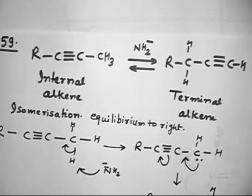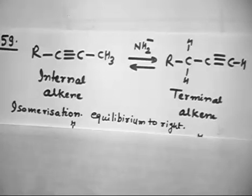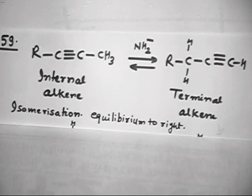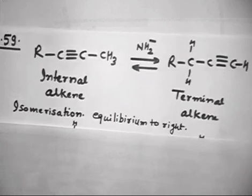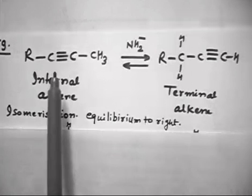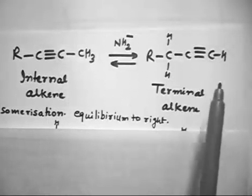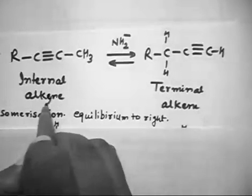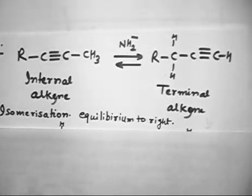Let us discuss this problem. Let us draw this figure and then discuss what this is all about. This is an internal alkyne because the triple bond is inside the aliphatic chain, not on the terminal side. This is a terminal alkyne. So one is terminal alkyne and one is internal alkyne.